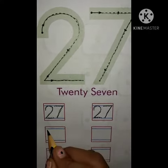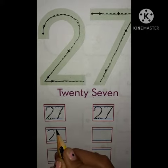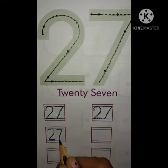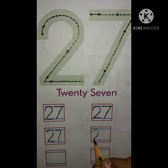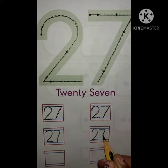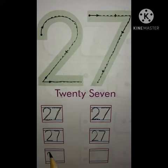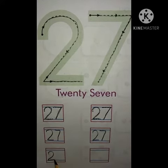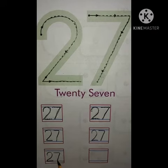Now without tracing: 2, 7, 27. Again: 2, 7, 27.